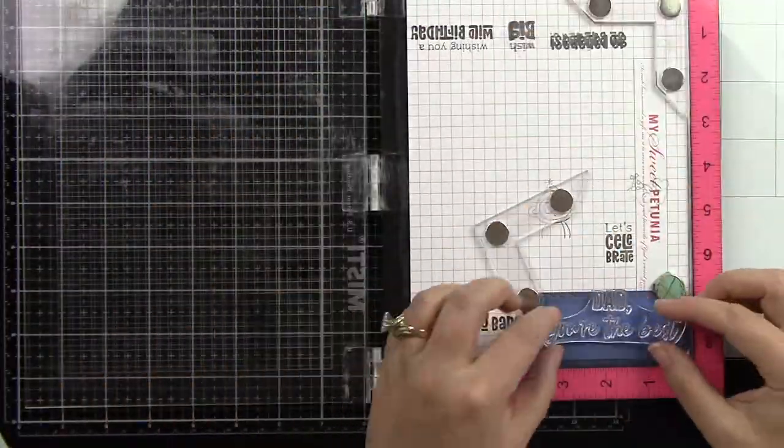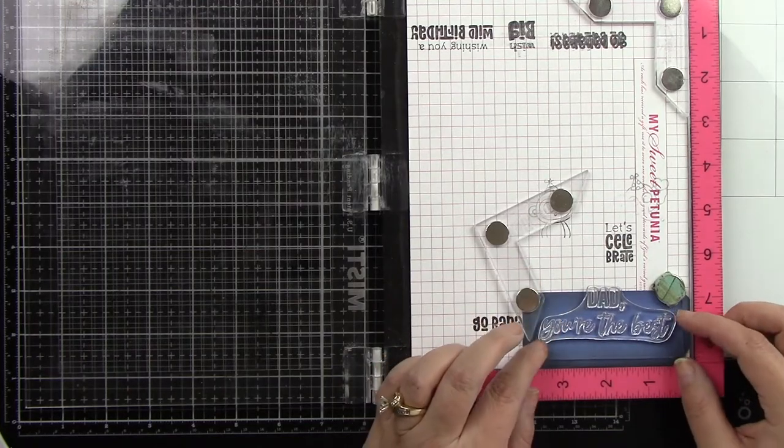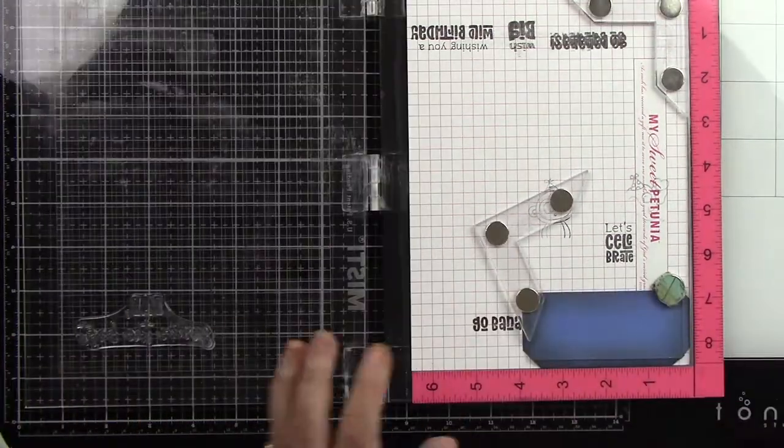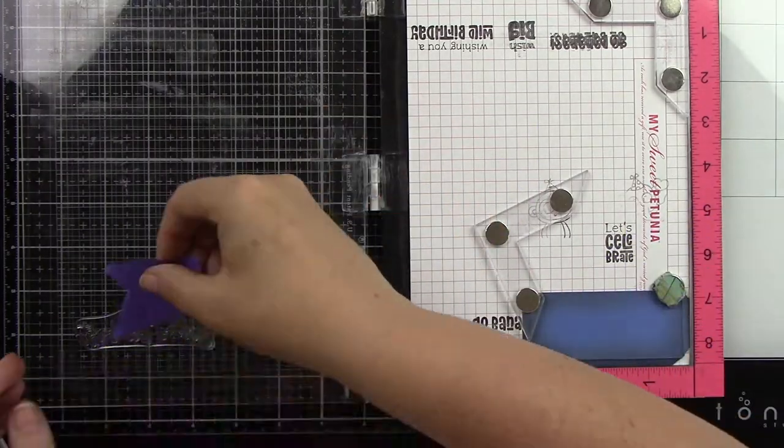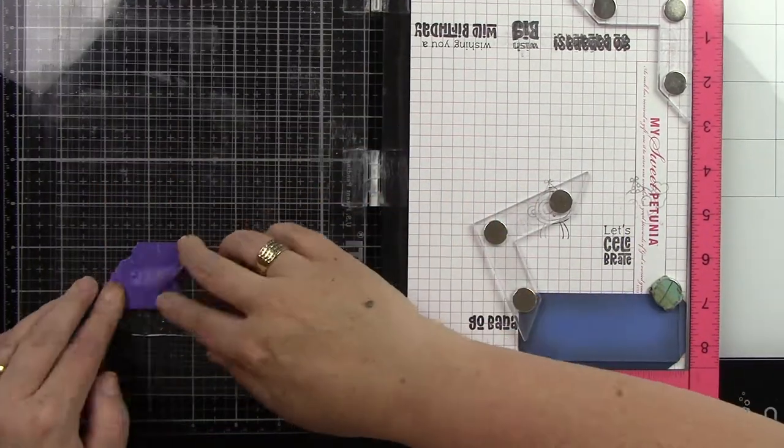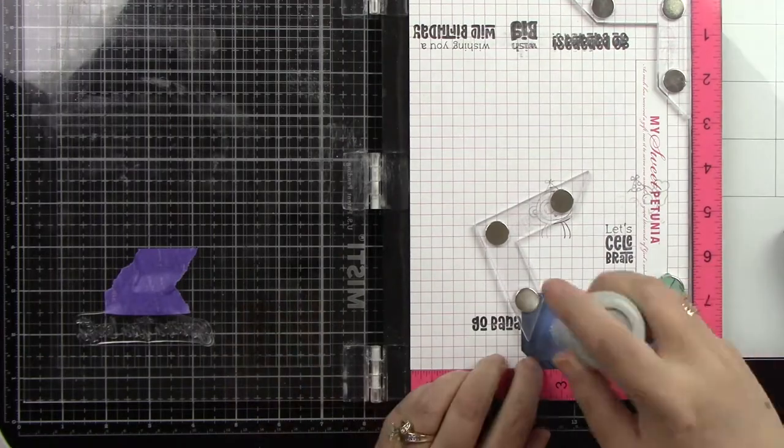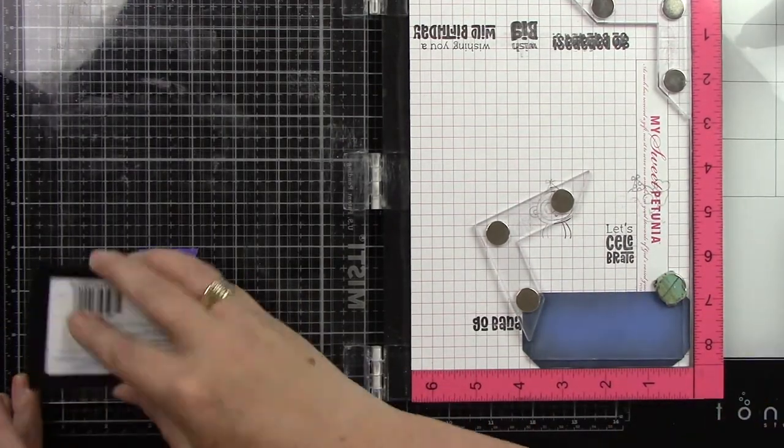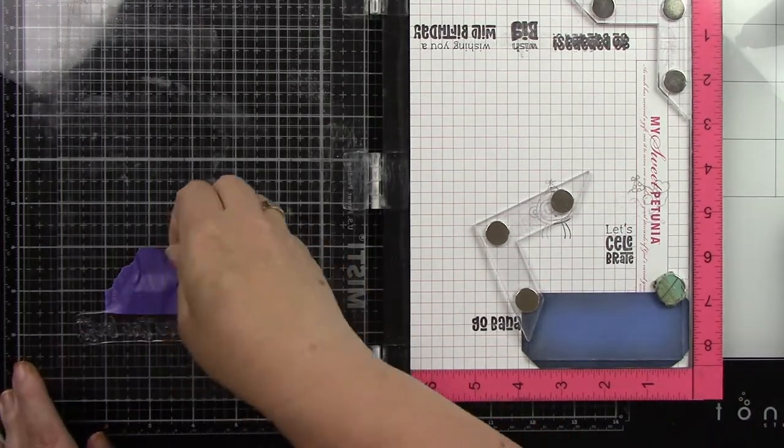Now the sentiment from the Kiss the Cook stamp set, I'm going to stamp that onto that little pocket. The whole stamp set says Dad, you're the best, but I'm not going to use the word Dad. So I'm going to mask that off with some tape. I'm going to prep my cardstock with an anti-static powder tool and ink up my stamp with VersaMark ink.